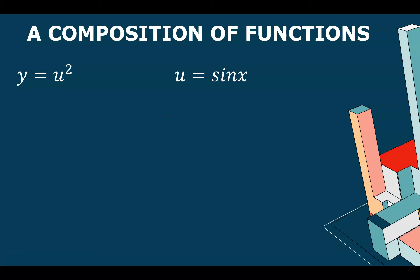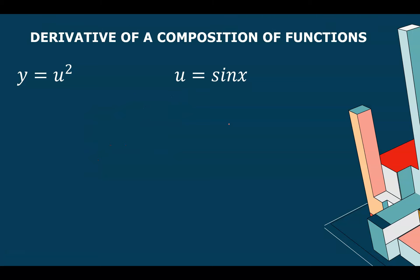Let's recompose. y is equal to something squared, and the something being squared is sine of x — normally written as sin²(x). The derivative of u² is 2u, and the derivative of sin(x) is cos(x). Using notation, dy/du = 2u and du/dx = cos(x).